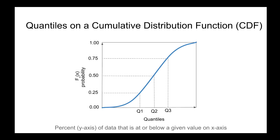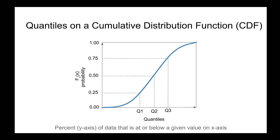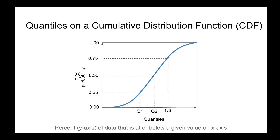Looking at the cumulative distribution plot, the x-axis shows quantiles and the y-axis shows probability calculated by the cumulative distribution function. We can interpret this as: 0.25, or 25 percent of the data, lies below Q1, the first quartile. Then 50 percent of the data lies below the second quartile, and 75 percent of the data is at or below the third quartile.